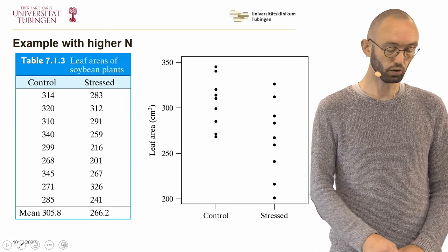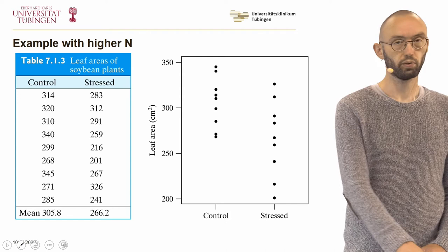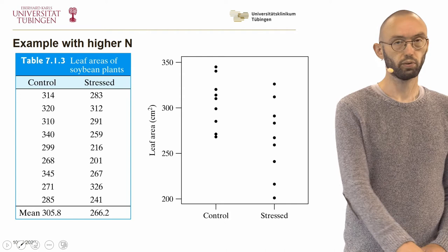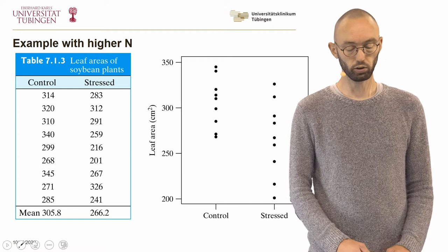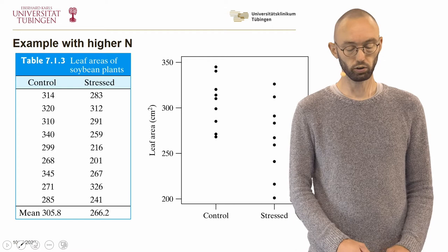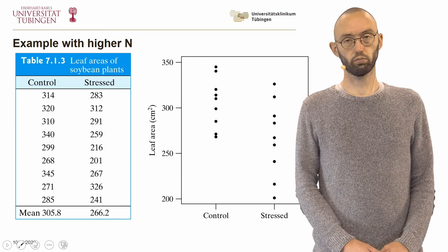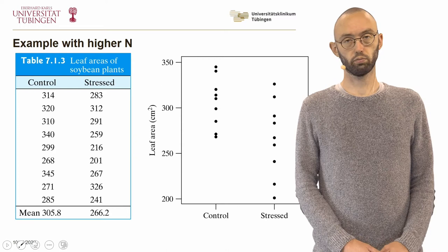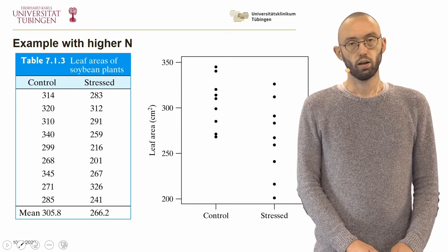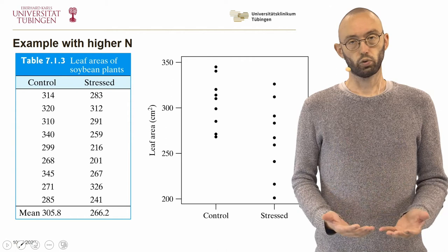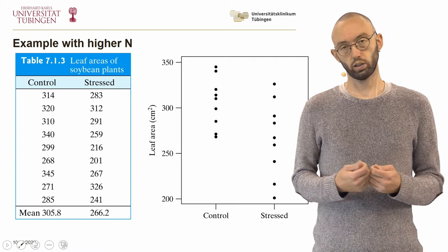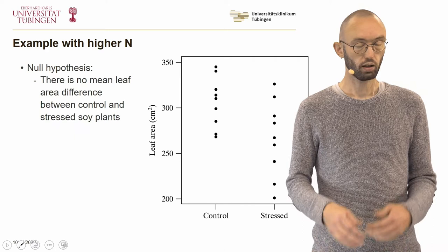Let's do an example with a higher n. Here we compare the leaf area of soybean plants between control plants and plants exposed to some stressor. Our sample means are 305 and 266. If we make a dot plot of the data, you can clearly see that the control group is shifted somewhat upward compared to the stressed group, so control plants have on average slightly larger leaves than stressed plants.